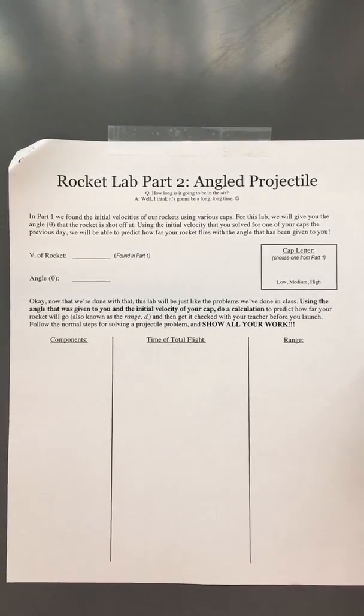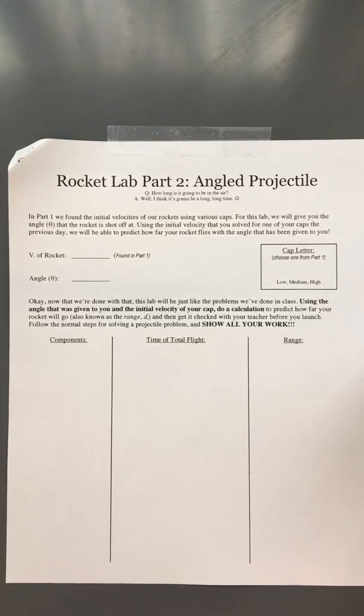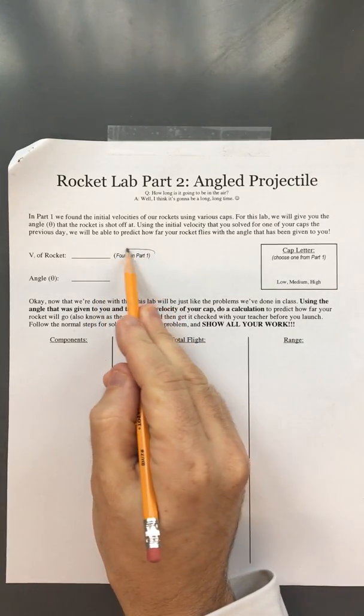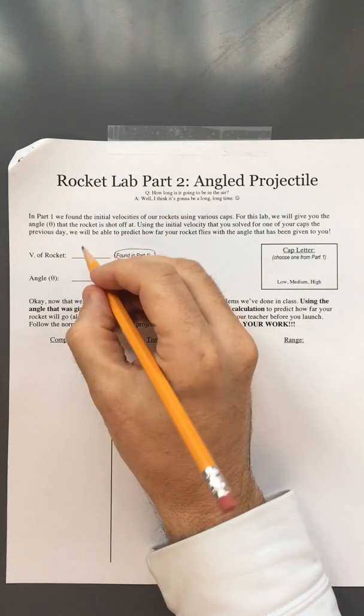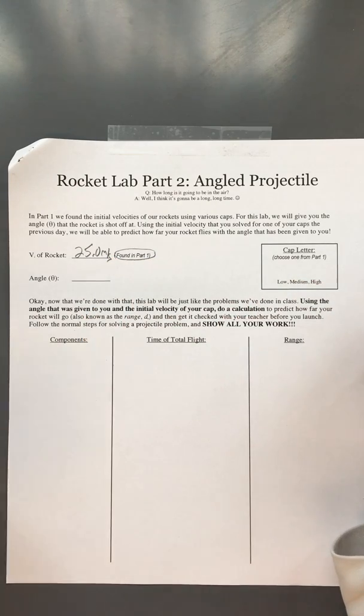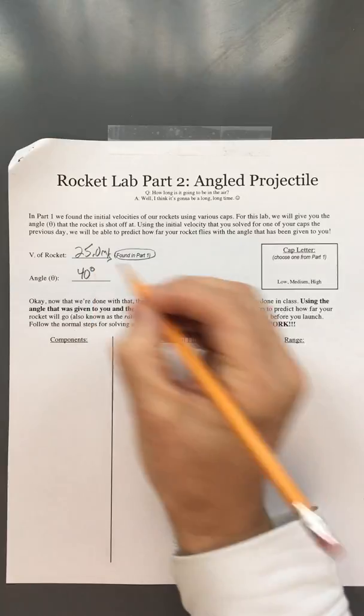Alright, this is Mr. Hendrickson, and I'm giving you a quick run-through on how to perform the calculations for the angled projectile portion of this lab. Yesterday you should have already determined the initial velocity of your rocket by doing the vertical rocket portion. I'm going to use an initial velocity of 25.0 meters per second and an angle of 40 degrees.